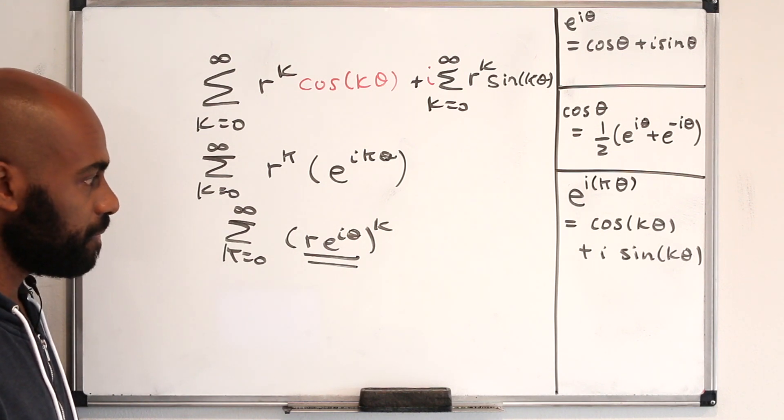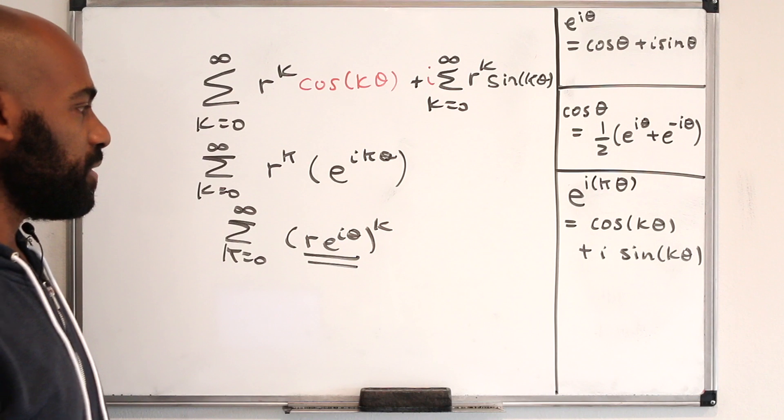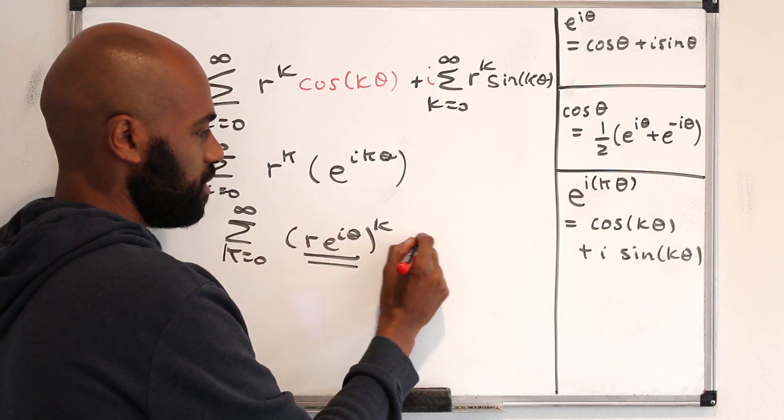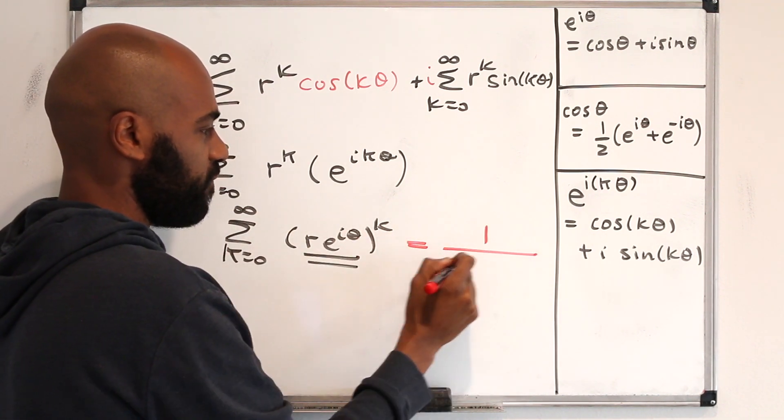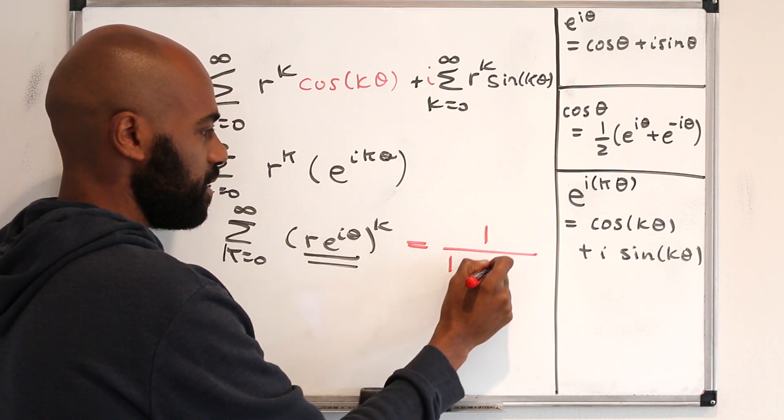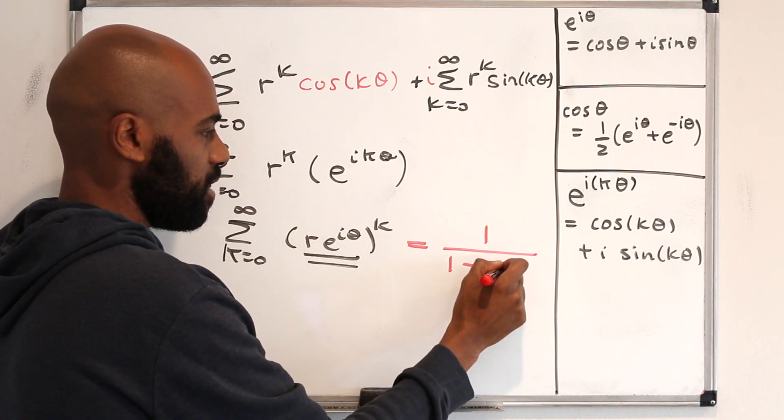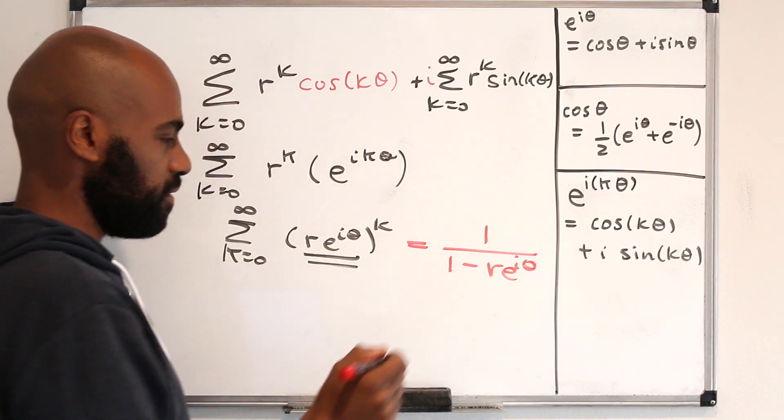Using similar properties that we have with real numbers, this can be represented in a shorter form as 1 over 1 minus the common ratio, which is r e to the i theta. So this is an honest-to-goodness complex number.